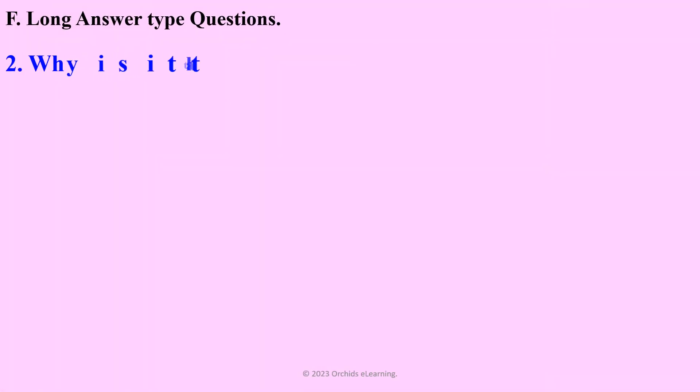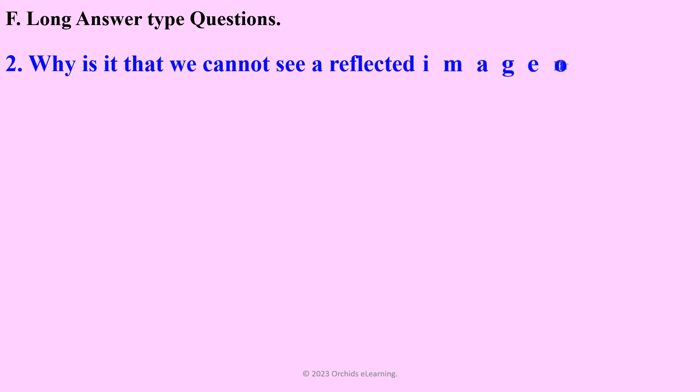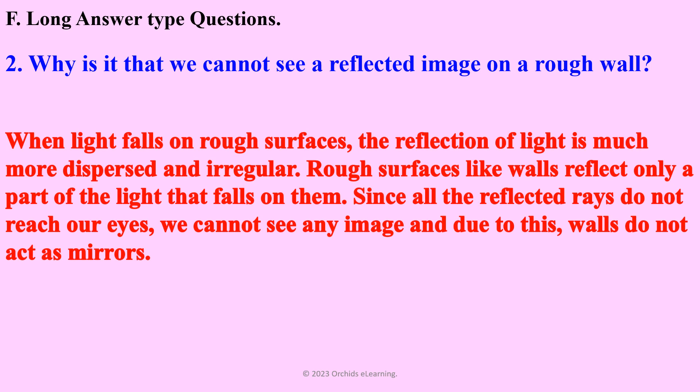Why is it that we cannot see a reflected image on a rough wall? When light falls on rough surfaces, the reflection of light is much more dispersed and irregular. Rough surfaces like walls reflect only a part of the light that falls on them. Since all the reflected rays do not reach our eyes, we cannot see any image, and due to this, walls do not act as mirrors.